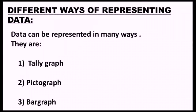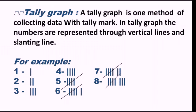Now we will learn the different ways we can represent data. Data can be represented in many ways — they are tally graph, pictograph, bar graph, etc. For this year, you will learn these three ways of representation of data. After that, there are many other types like pie chart and line graph, but no need to learn those now. Today we are going to discuss only about tally graph, not pictograph, not bar graph. A tally graph is one method of collecting, representing, and interpreting data. In a tally graph, the numbers are represented through vertical lines and slanting lines — vertical means standing lines.